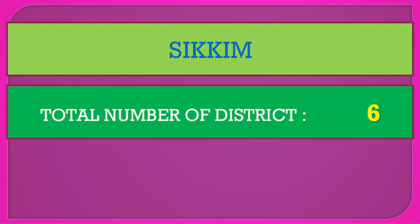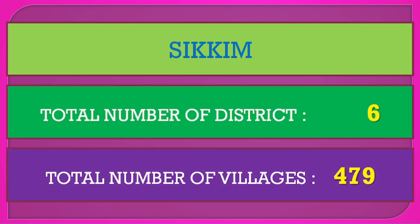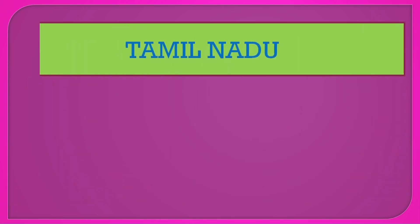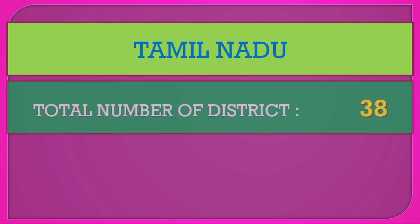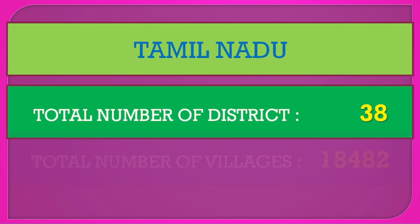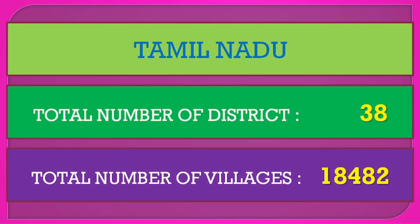Sikkim: total number of districts 6, total number of villages 479. Tamil Nadu: total number of districts 38, total number of villages 18,482.